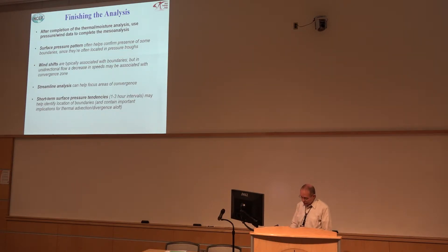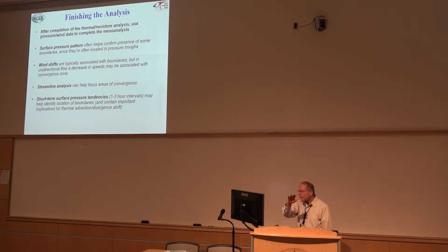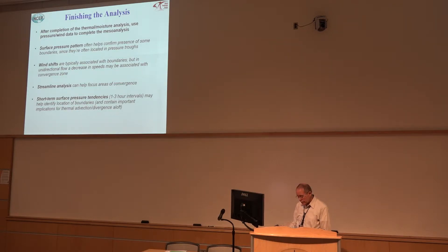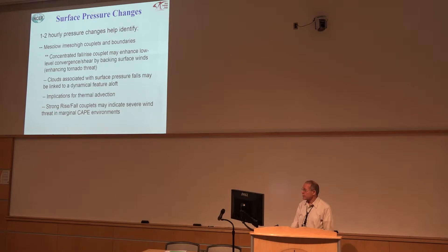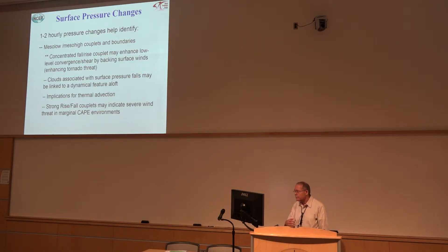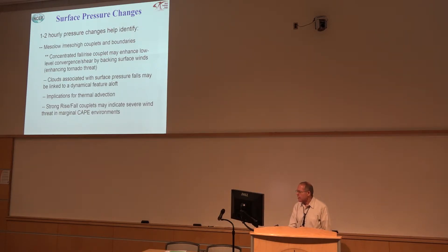Pressure tendencies may give us implications of thermal advection or divergence aloft. If we have pressure falls at the ground, something's taking place above that in the vertical — whether it be warm advection or divergence. We like to look for meso-low or meso-high couplets in boundaries. A concentrated fall-rise couplet can enhance convergence in the area. There's a lot of things that we should be looking at to try and pay attention.